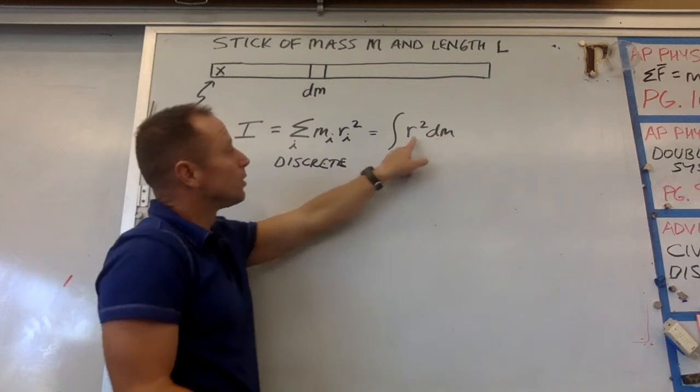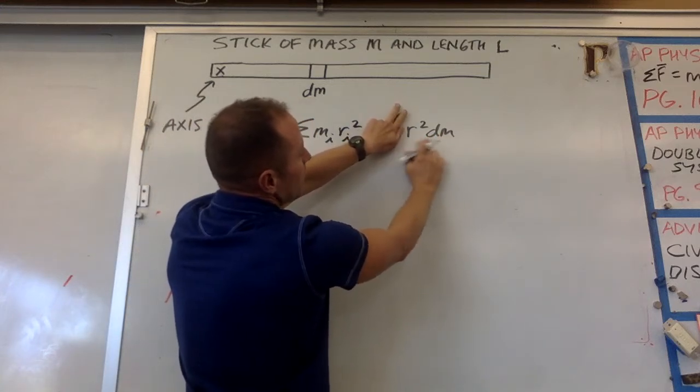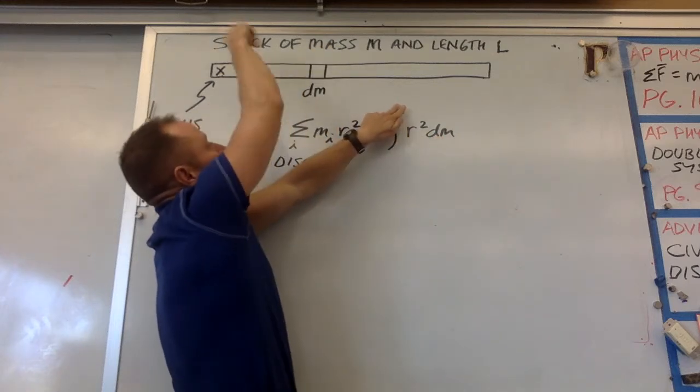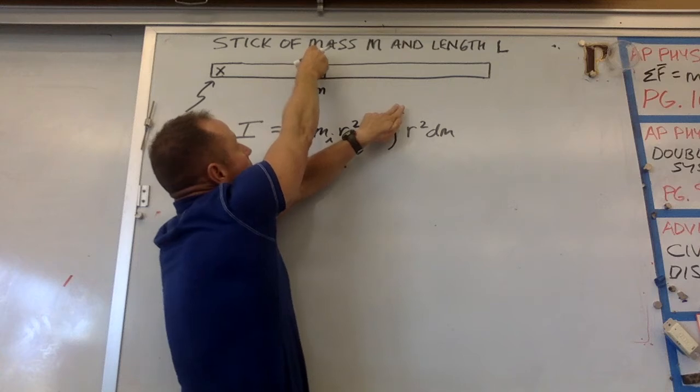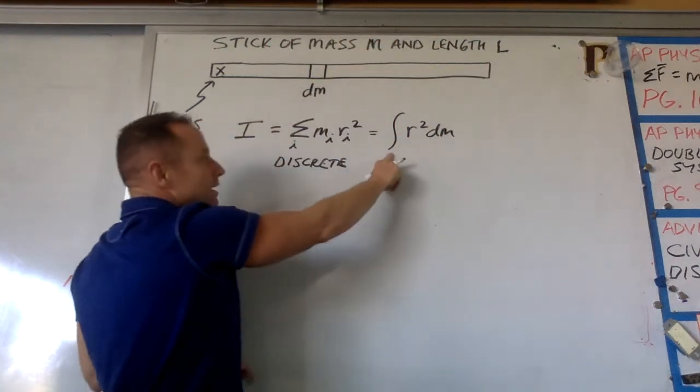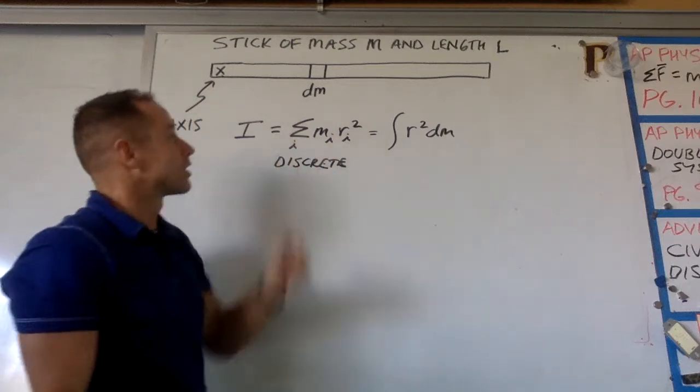So what ends up happening then is each little chunk of mass, dm, you multiply it by r squared. So what this combination would mean without the integral sign is that would be the moment of inertia of just this little bitty chunk going around that axis. And then what we need to do is add them all up. And so that's what adding them all up is this integration that we're going to do.